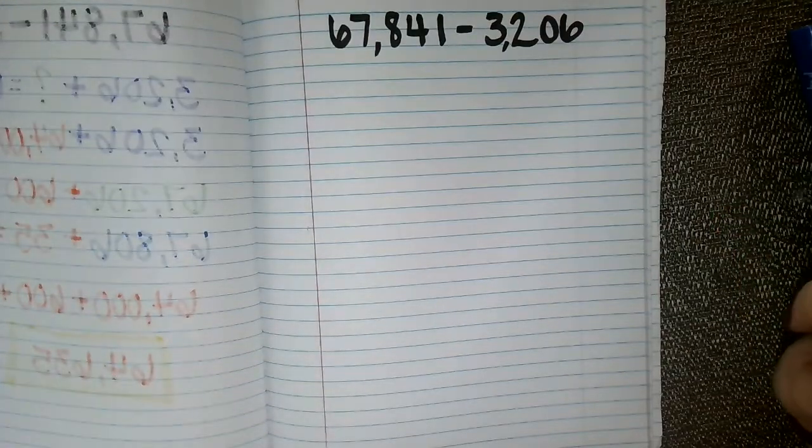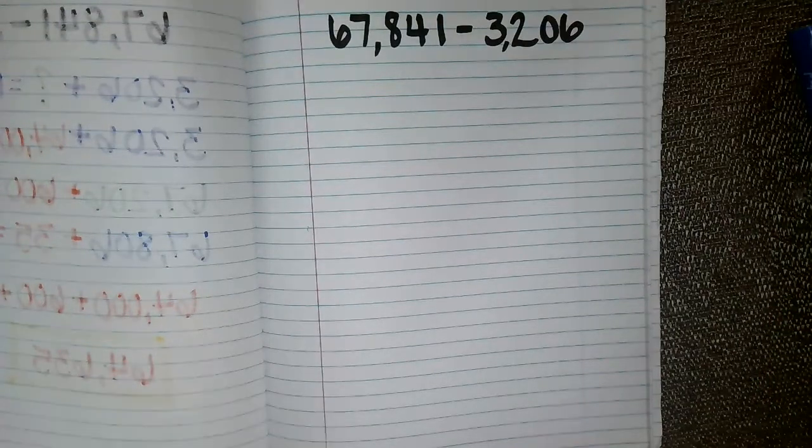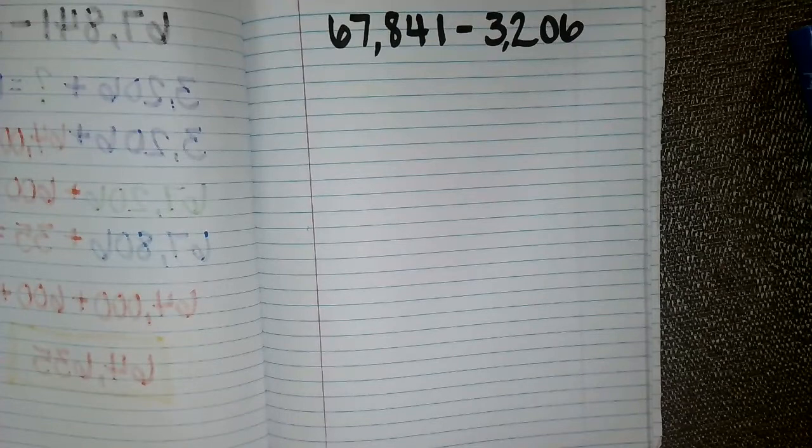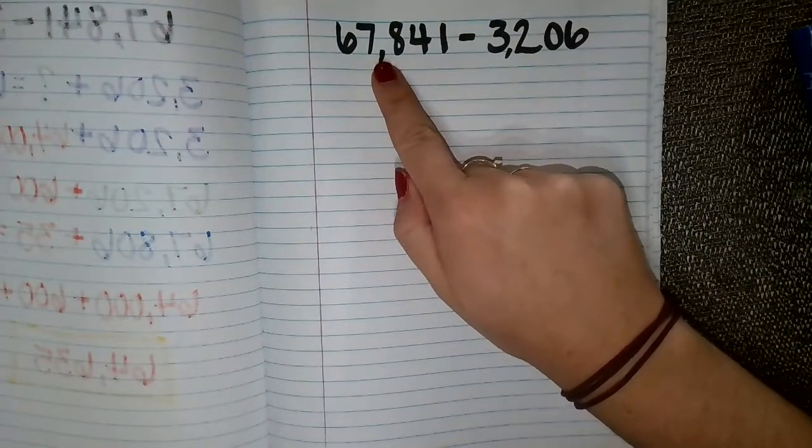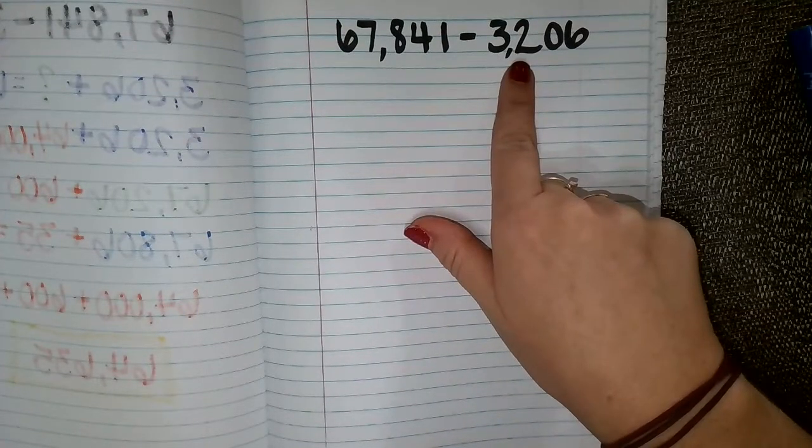Welcome back. This is going to be practice two of our subtraction strategies. So you're going to need a piece of paper again and something to write with. And we are going to use the same numbers we used on practice one. So we are going to use 67,841 and we are going to take away 3,206.